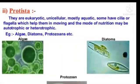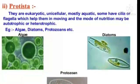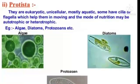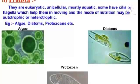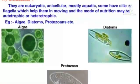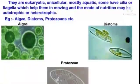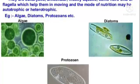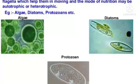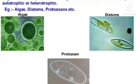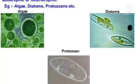Protista: They are eukaryotic, unicellular, and mostly aquatic. Some have cilia or flagella which help them in moving, and the mode of nutrition may be autotrophic or heterotrophic. Examples: algae, diatoms, protozoans, etc.